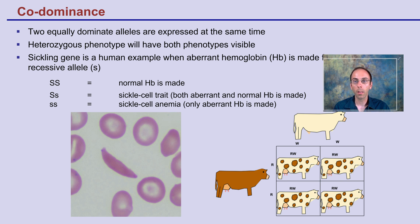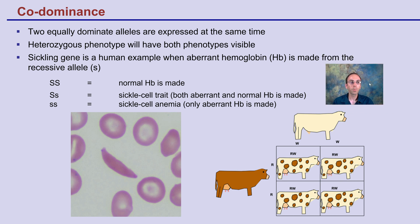We also have something called co-dominance. As the name implies, two equally dominant alleles are expressed at the same time. The heterozygote's phenotype will have both phenotypes visible. For example, with hemoglobin and sickle cell anemia, we see both the normal hemoglobin and the sickle trait being observed. A perhaps easier visual example: if we cross a white cow with a brown cow exhibiting co-dominance, we get a white cow with brown spots — both colors are visible.